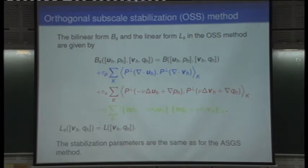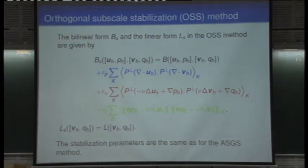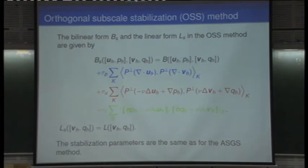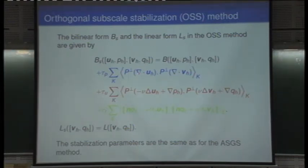The second method is what we call orthogonal subscale or variational multiscale stabilization. Instead of putting the full residual, we put the orthogonal component of the residual. Only the orthogonal component of the residual appears — both in the residual term and in the differential operator. The divergence of V can be split into its orthogonal projection plus the projection onto the finite element space, but the latter tested against the orthogonal projection is zero by definition.